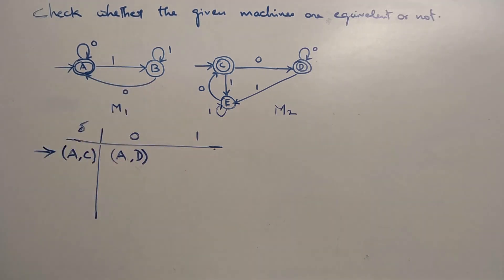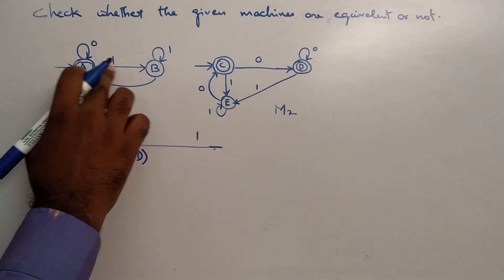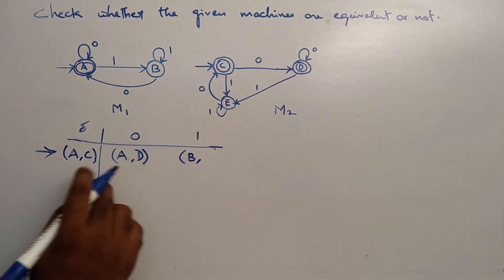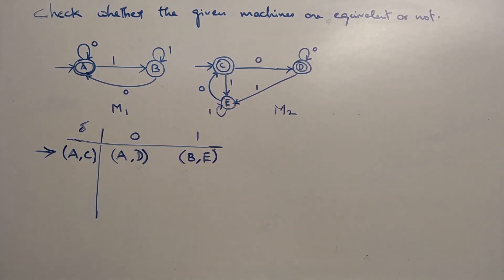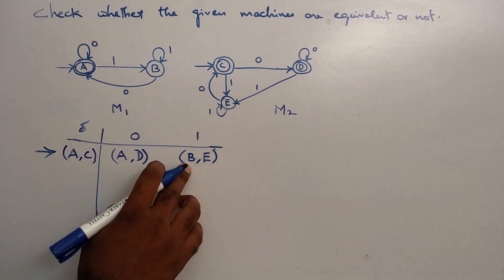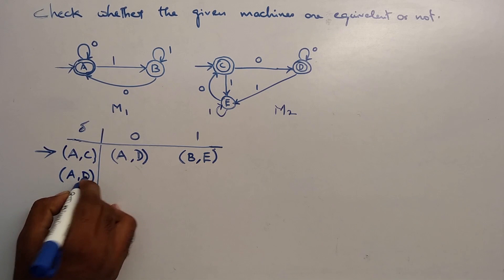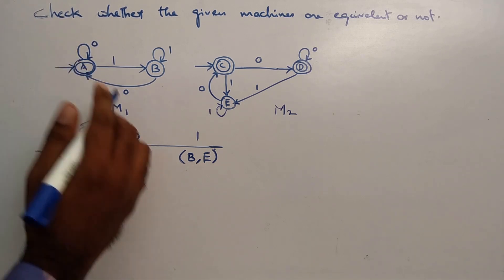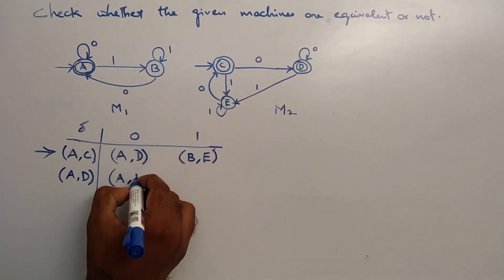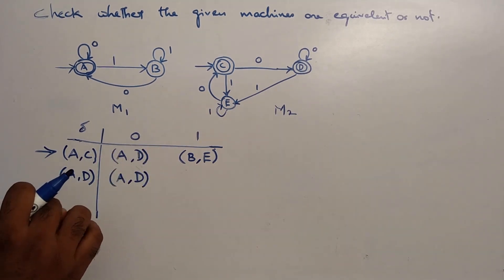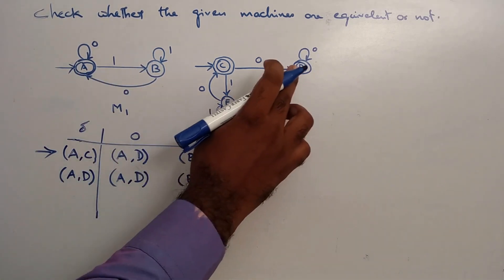On input 1: A on 1 gives B, and C on 1 gives E. So from the initial pair (A, C), on input 0 we get (A, D) and on input 1 we get (B, E). Next, for pair (A, D): on input 0, A gives A and D gives D — same state B.